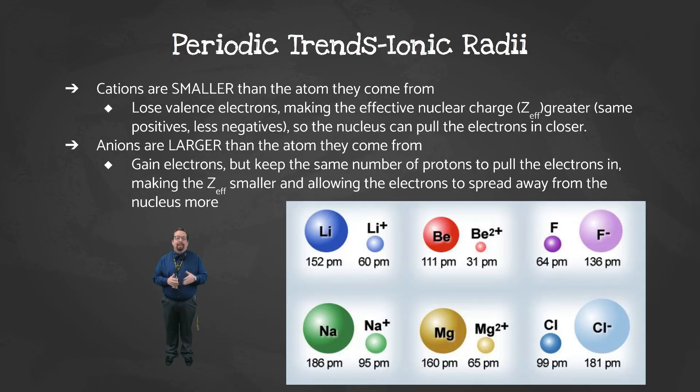When an atom loses or gains electrons, it becomes an ion. The radius of an ion is different than the radius of its atom because the effective nuclear charge is different. When an atom loses electrons, it becomes positive and becomes a cation. It now has less electrons, but the same amount of protons. This increases our effective nuclear charge. So the nucleus can pull the outer electrons in closer. If an atom gains electrons to become an anion, it gets larger. This is because we keep the same number of protons, but we're adding electrons, therefore reducing our effective nuclear charge. The outer electrons want to spread away from each other more, and the nucleus doesn't have the strength to hold them in tight.